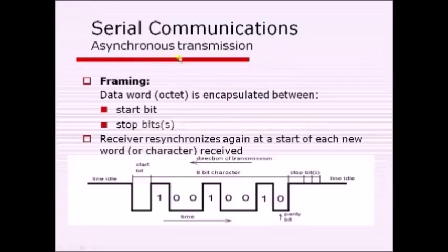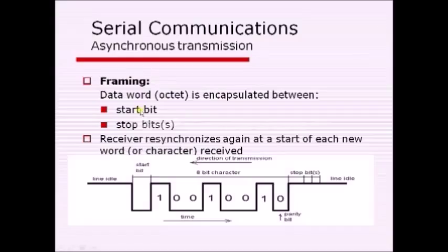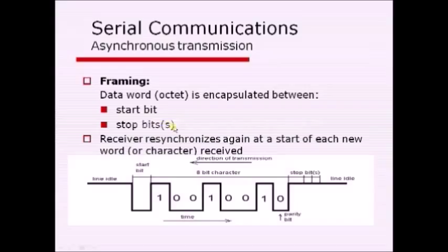In asynchronous transmission, data is transmitted character by character, and every character goes through a process called framing. The output of this process is called a frame. In the framing process, each character is added with some additional bits: a start bit, a stop bit, and an optional parity bit. The start bit indicates to the receiver that it is the start of a character, and the stop bit indicates that it is the end of a character. With these bits, the receiver and transmitter get synchronized.